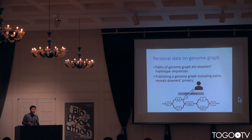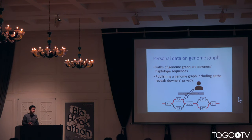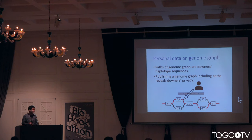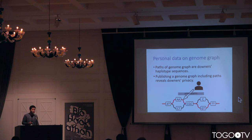Genome graph has a high power of expressing human variation. But the genome graph could reduce donor's privacy. Paths of genome graph are a donor's haplotype. So, publishing a genome graph including paths reveals the donor's privacy.